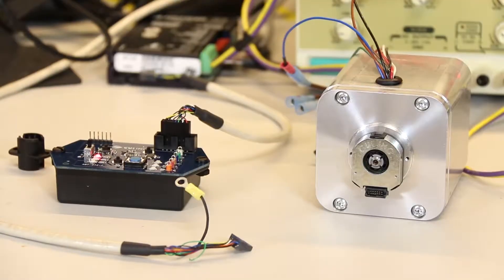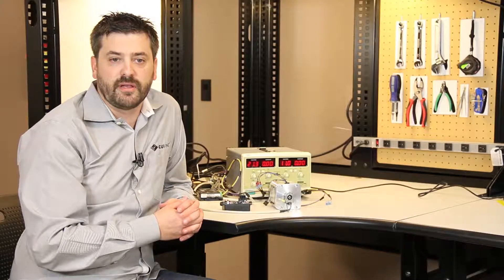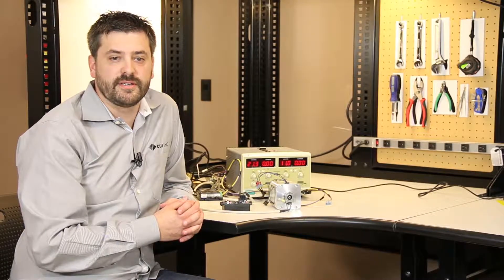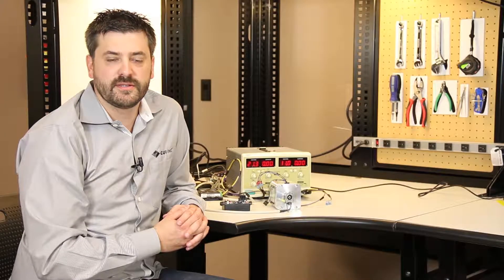As we've demonstrated, installing an alignment commutation encoder onto a motor doesn't need to slow down your assembly line. With the AMT 31 series and its innovative 1 touch 0 module, we've reduced this process from minutes to seconds.